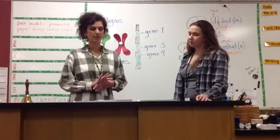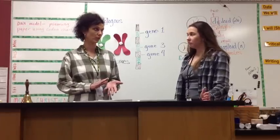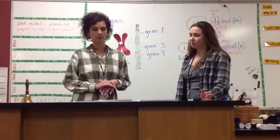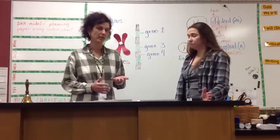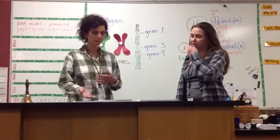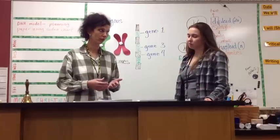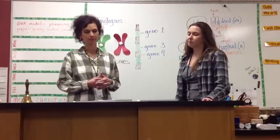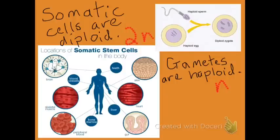For humans, diploid cells have 46 chromosomes, or 23 pairs — so 23 times 2 is 46. And gametes are haploid; they only have 23 chromosomes. Somatic cells are diploid — all the ones in this picture below have two copies of each chromosome. Gametes are haploid, so eggs and sperm have one copy of each chromosome.